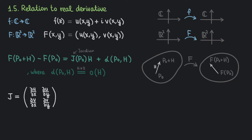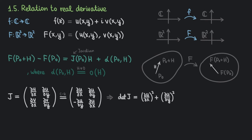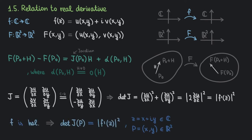If the corresponding complex function f is holomorphic, applying the Cauchy-Riemann equations gives J a specific structure. The determinant of J is (∂u/∂x)² + (∂u/∂y)², which is the square of the absolute value of some complex number — specifically, it equals |2 · ∂u/∂z|², which is just |f′|². So if f is holomorphic, then the corresponding real function F has a Jacobian whose determinant equals the absolute value of the derivative of f, squared.